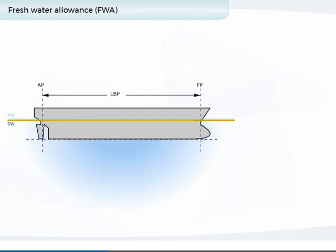Where there are densities different to salt water or fresh water, the fresh water allowance must be adapted to a dock allowance, which is a proportion of the fresh water allowance.